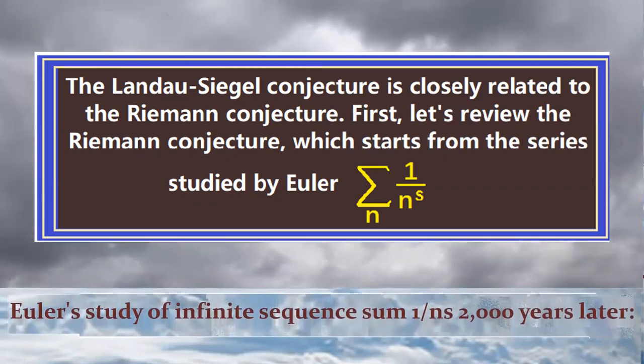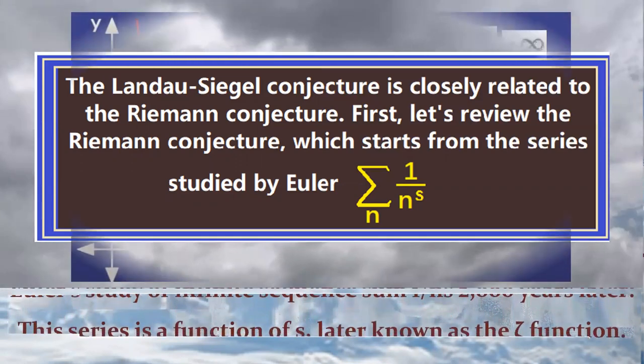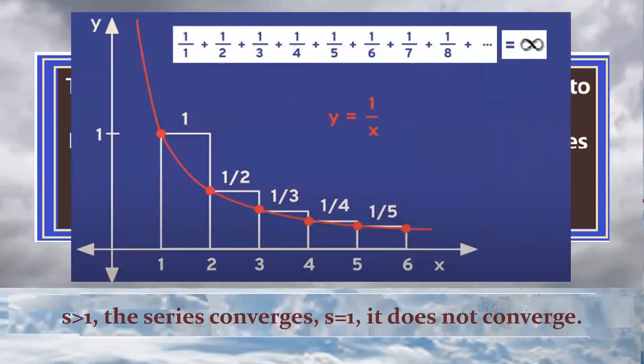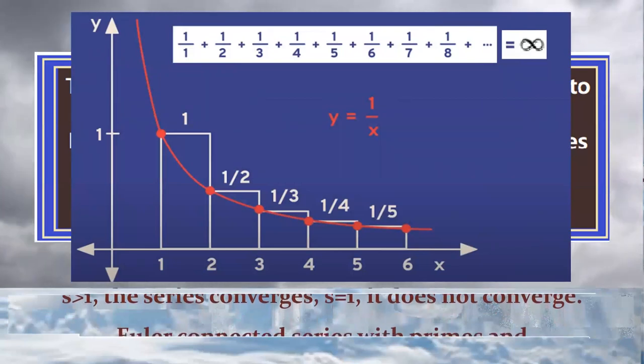Euclid proved that there are infinitely many prime numbers. Euler's study of infinite sequence some 2,000 years later. This series is a function of s, later known as the zeta function.